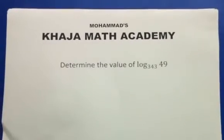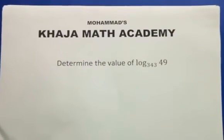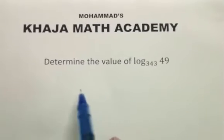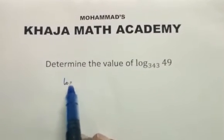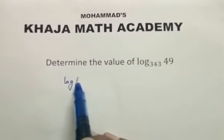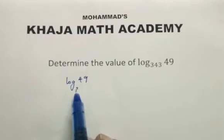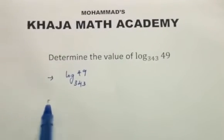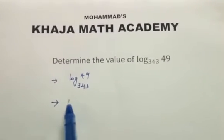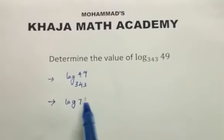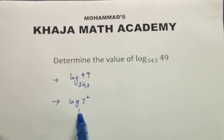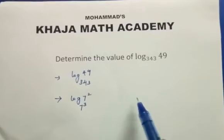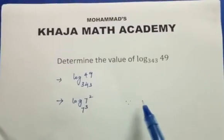Determine the value of log 49 to the base 343. Here, log 49 can be written as log 7 squared, and for 343 you can write it as 7 cubed.